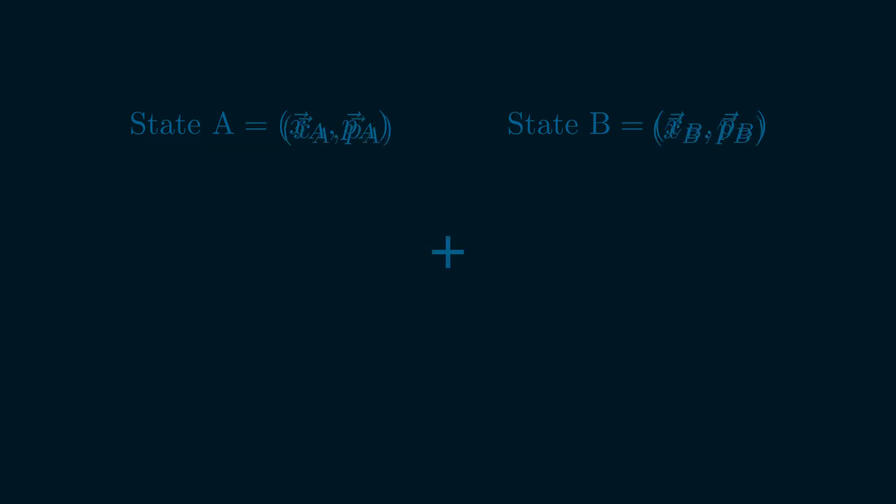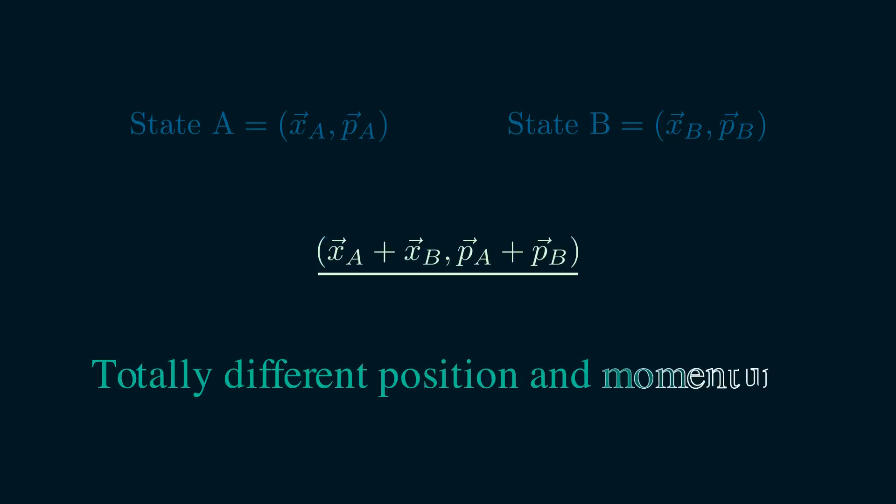If one possible state is (x_a, p_a) and another is (x_b, p_b), then adding them just gives a new point (x_a + x_b, p_a + p_b). But this new point doesn't necessarily have any physical meaning in classical mechanics.